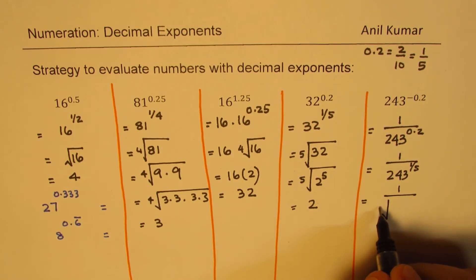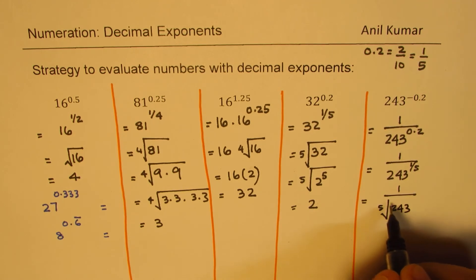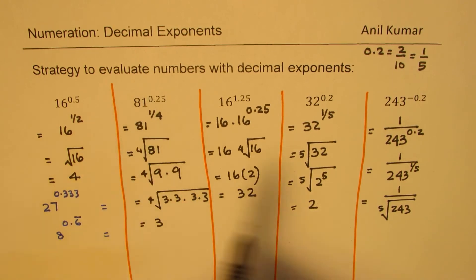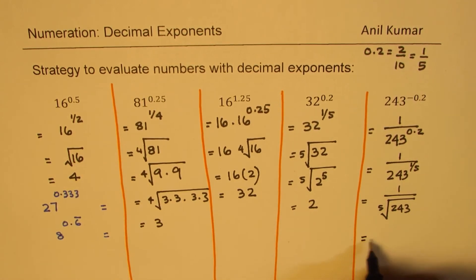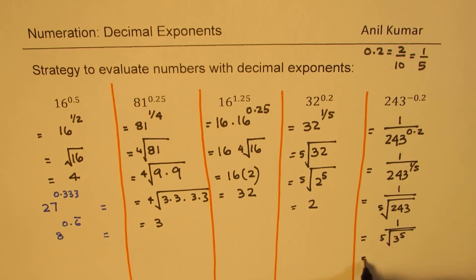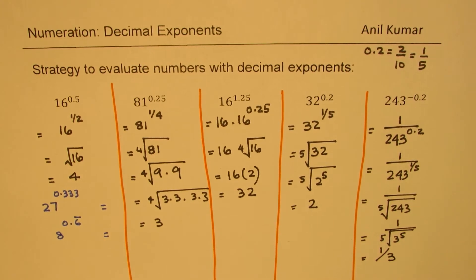Now 3 to the power of 5 is 243, so we can write the fifth root of 243 as 3, and therefore our answer is 1 over 3. So that is how it can be done when the exponent is negative.